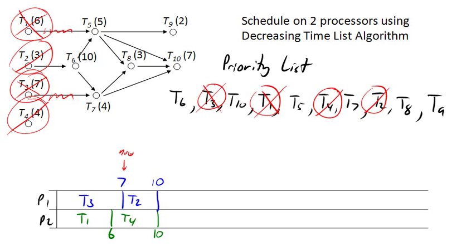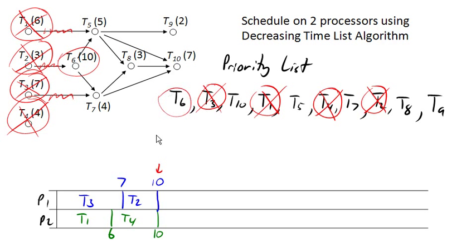Our next interesting moment is at time ten, when both task four and task two get completed. We update our ready list — are there any ready tasks? The answer is yes: task six is ready, but nothing else. Processor one is going to get assigned task six, which is going to take ten units of time. During all that time, processor two is going to be idle and will not have anything to work on. So task six has been assigned.